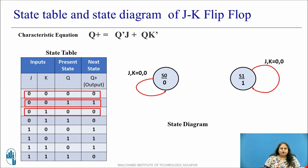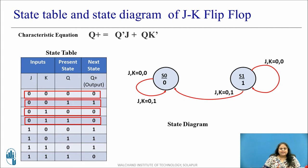For the next combination, when present state is 0 and J equals 0 and K equals 1, there is no state transition. When present state is 1 and J is 0 and K is 1, the next state is 0 and therefore state transition takes place.